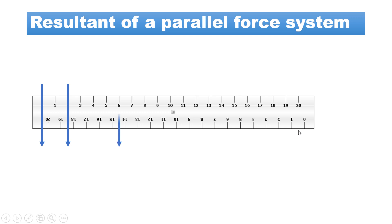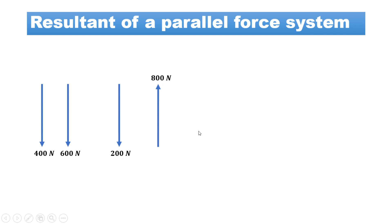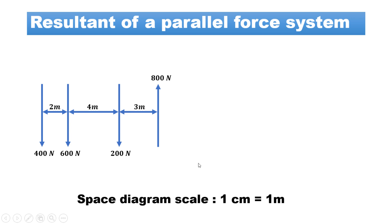The various forces acting on the system are shown over here. The magnitude of the forces are 400N, 600N, 200N acting in the downward direction, and 800N acting in the upward direction. The distances between the forces are given as 2m, 4m, and 3m respectively. This is our space diagram where we have taken the scale as 1cm equal to 1m.